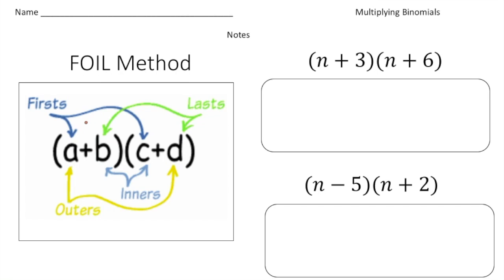F stands for First — notice this arrow points to A, which is the first term of this binomial, and C, which is the first term of the other binomial. So this would be A times C, which is AC. To that you add O, which stands for Outside. So A times D — because they're on the outside of the house — gives you AD.